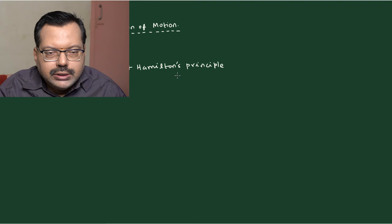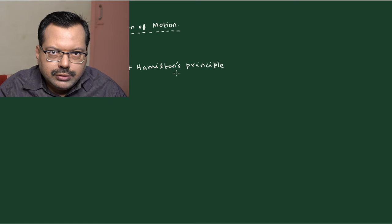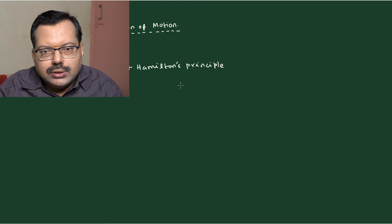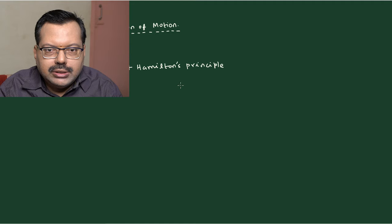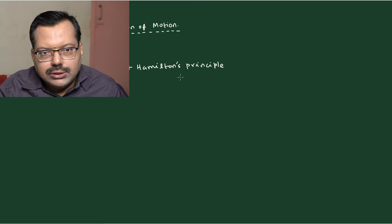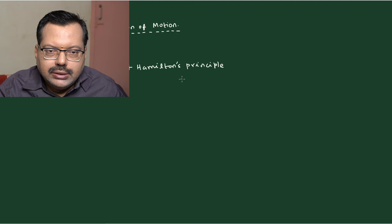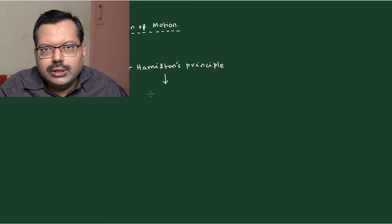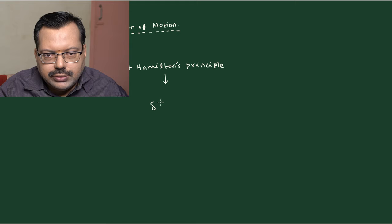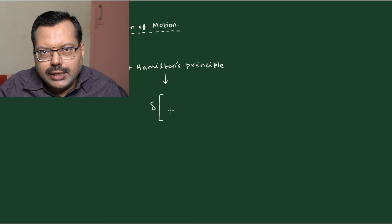Calculus of variation will naturally enter into Hamilton's principle because if you refresh your memory, the statement of Hamilton's principle tells you that it is the extremization of the phase space trajectory subject to parametric variations on the generalized coordinates. To make things clear, I am explicitly writing the two things: one is calculus of variation, the other is Hamilton's principle. Hamilton's principle is written as the variation of the action — that is where calculus of variation comes into picture — and the action happens to be an integral, known as the action integral.